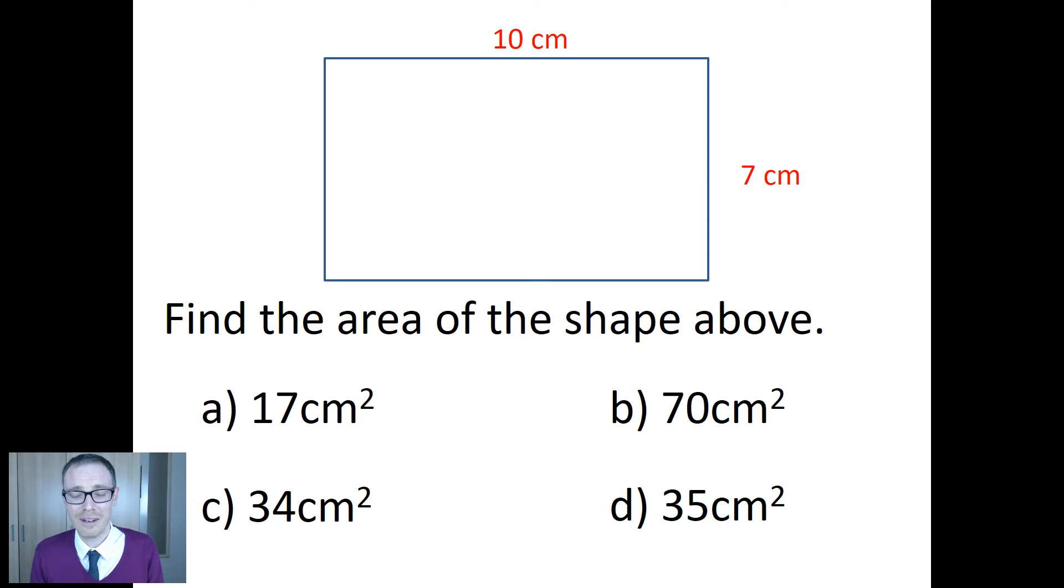And finally what about D, 35? Where does 35 centimeters come from? Well this is for students who have been told so many times that to get the area of a triangle you do base times height and half it, they're just halving everything in sight. So they've done 10 times 7 and divided their answer by 2.